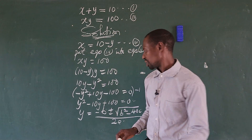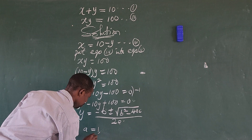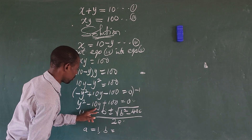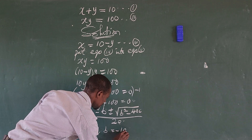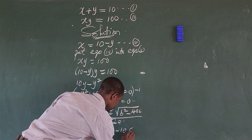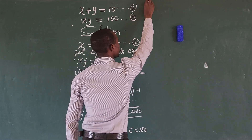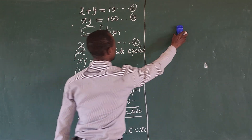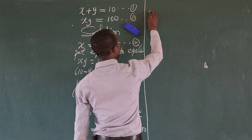We identify the values: a is positive 1, b is the coefficient of y which is minus 10, and c is the constant term which is 100. Now we substitute these into the formula.